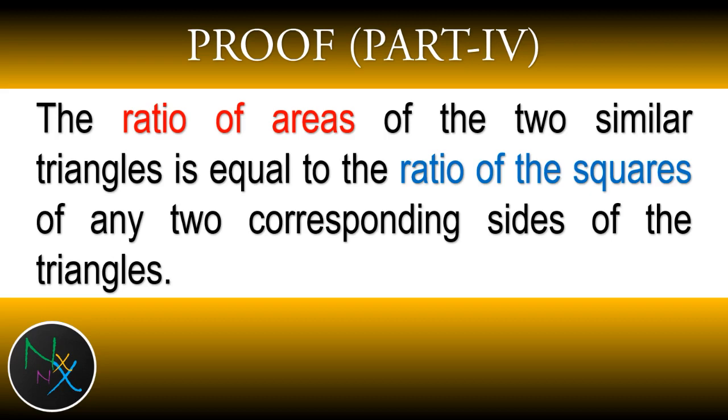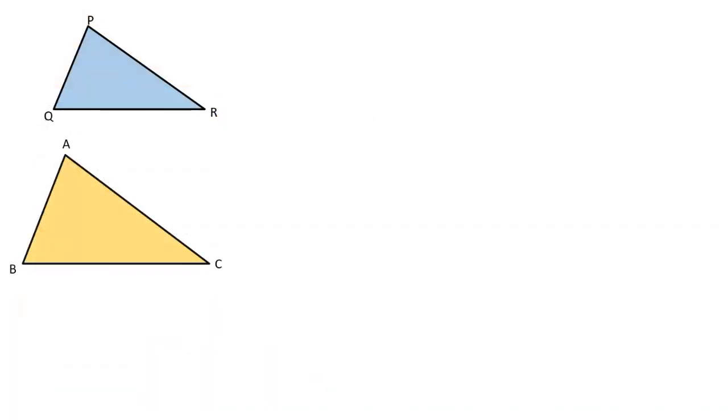Let's start proving this. Let PQR and ABC be two given similar triangles. Then we have to prove that the ratio of area of triangle PQR and triangle ABC is equal to the square of the ratio QR over BC.